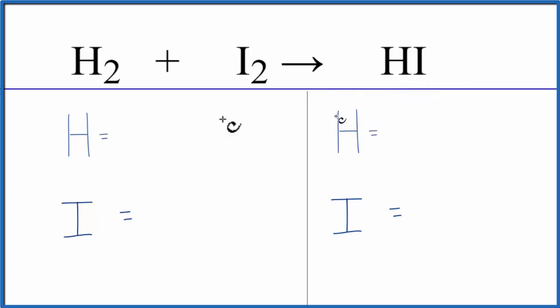So to balance the equation, let's count the atoms up on each side. Our reactants here, we have two hydrogen atoms, and we have two iodine atoms.